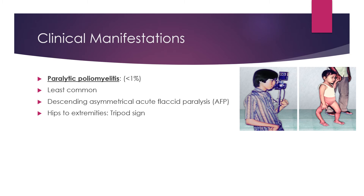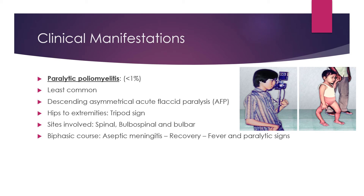The paralysis leads to the characteristic tripod sign, seen in the picture, where the child sits with a flexed hip and both arms extended backward for support. Sites involved can be spinal, bulbospinal, and bulbar, depending on the nature of paralysis. In children, the disease progression is typically biphasic: aseptic meningitis occurs first, then the patient recovers, then fever with paralytic features returns after one to two days. Cranial nerves are occasionally involved; however, there is no sensory loss.